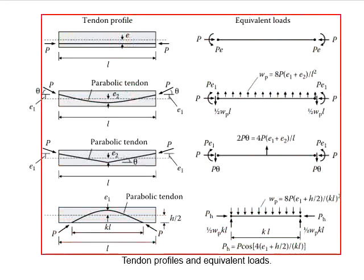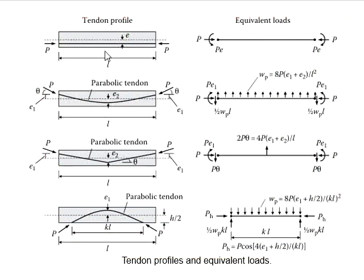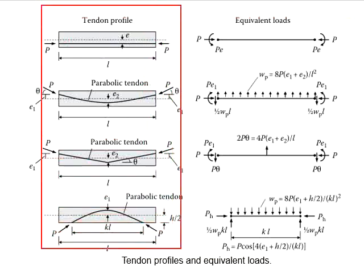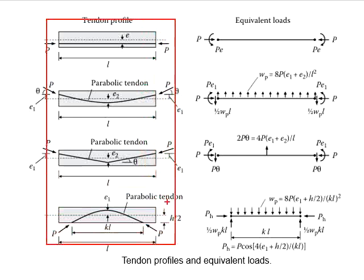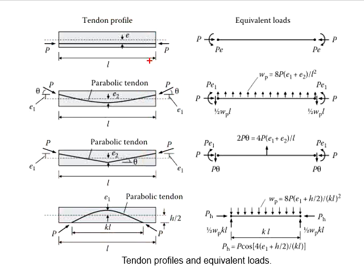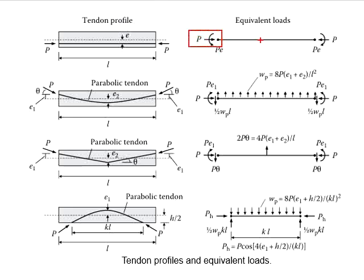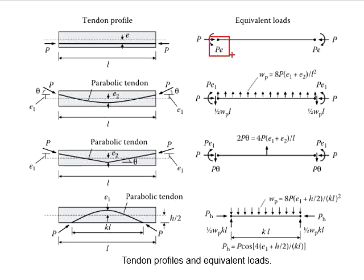This figure shows how we can generate equivalent loads based on different types of tendon profile. You can consider this as one segment of a continuous member. When you apply the pre-stressing force at a certain degree of eccentricity, there will be a compressive force caused by the pre-stressing tendon, and there will be a fixed end moment at the end of the span due to the pre-stressing force multiplied by its eccentricity.